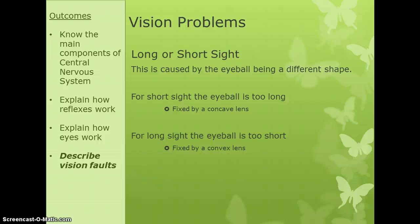Long and short sight are caused by the eyeball being a slightly different shape, so the lens focuses light in the wrong place relative to the retina. For short sight the eyeball is too long, corrected with a concave lens. For long sight the eyeball is too short, corrected with a convex lens — both corrections are higher-level knowledge. Key revision points: learn the parts of the neuron and the steps of the reflex arc, as those are commonly examined.